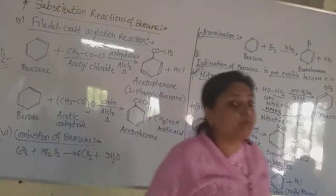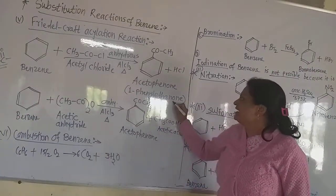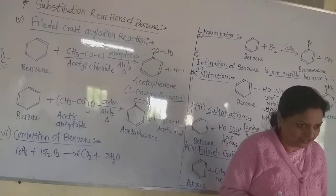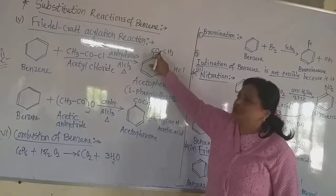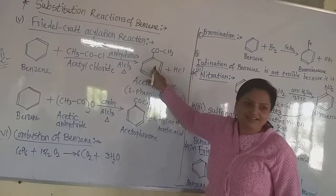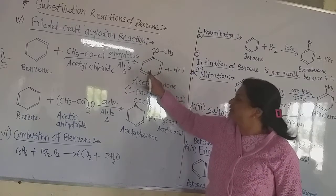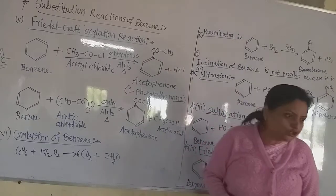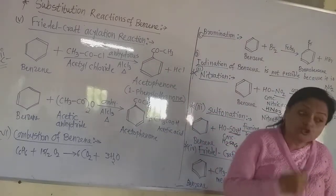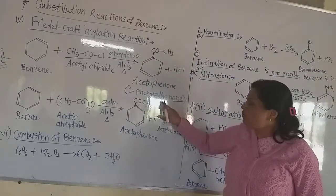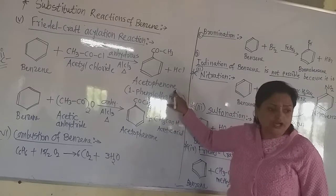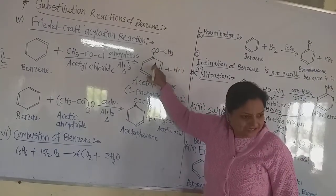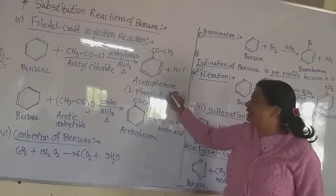Why is the product named acetophenone? The suffix -one indicates it is a ketone. In a ketone there is a C=O group with two different alkyl or aryl groups — here benzene ring on one side and methyl group on the other, with a ketonic group in between. So the suffix -one is used. It is called acetophenone because there is an acetyl group and a phenyl group joined as a ketone.